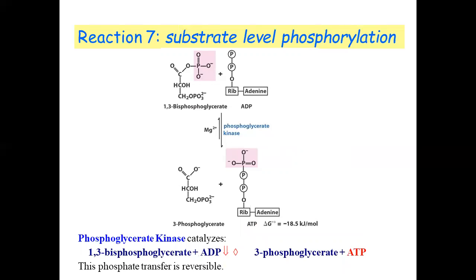1,3-bisphosphoglycerate will lose one phosphate; ADP gains it to form adenosine triphosphate. This reaction is reversible, it can go in both directions. Whenever kinase is used, we have the cofactor magnesium. So the products are ATP and 3-phosphoglycerate.